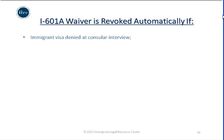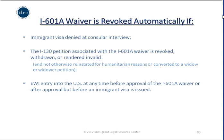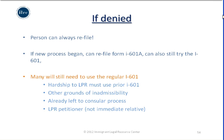The waiver is automatically revoked if the immigrant visa is denied at the consular interview. Other reasons for revocation include: the associated I-130 petition is revoked, withdrawn, or rendered invalid (unless later reinstated for humanitarian reasons or converted to a widow or widower petition), or if there is an entry without inspection into the United States at any time before approval of the I-601A waiver or after approval but before an immigrant visa is issued. If the waiver is denied, it cannot be appealed; the person can only refile it paying the fees again, or file a new I-601A under a new I-130, or file the regular I-601 waiver.